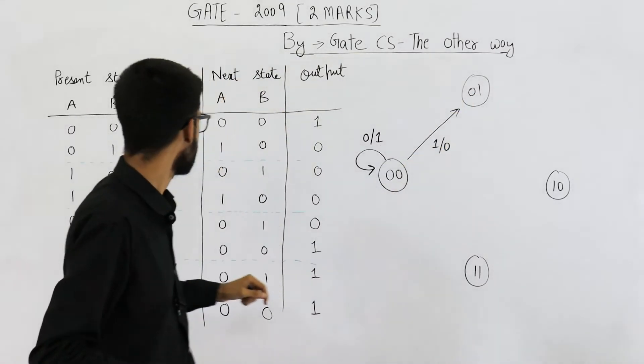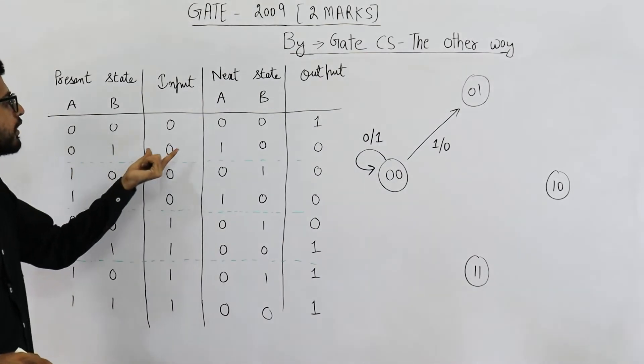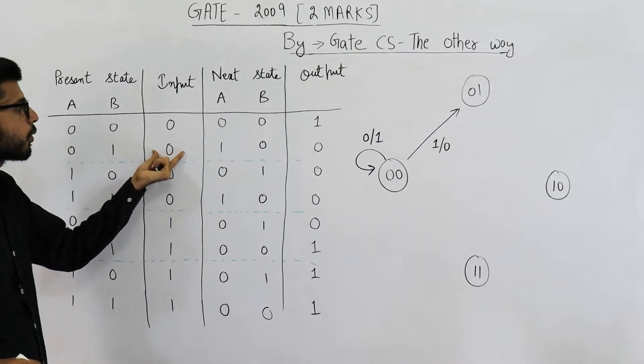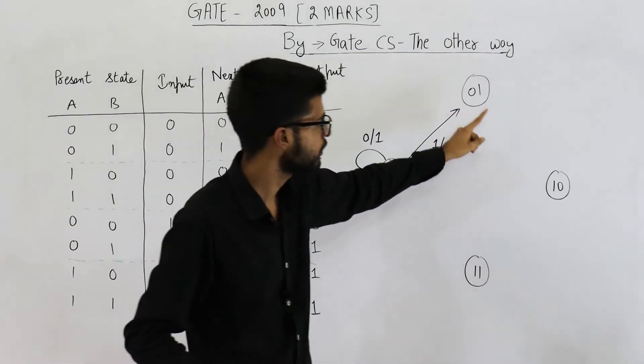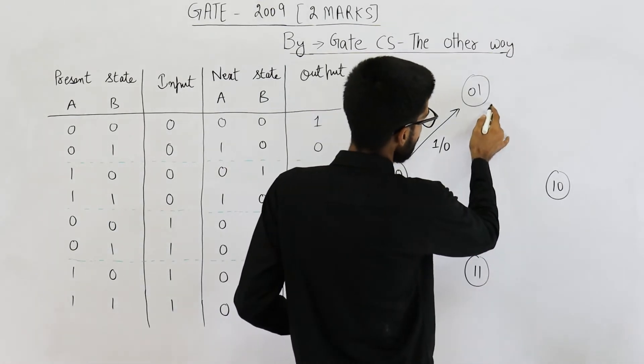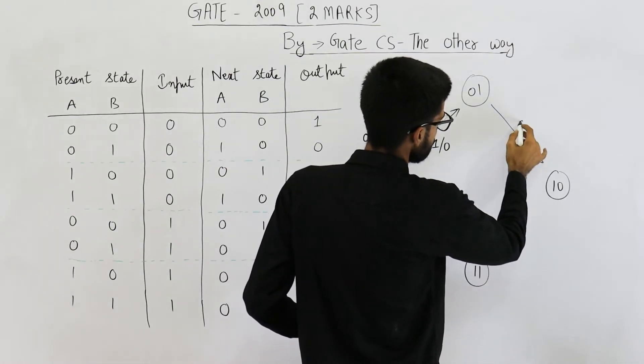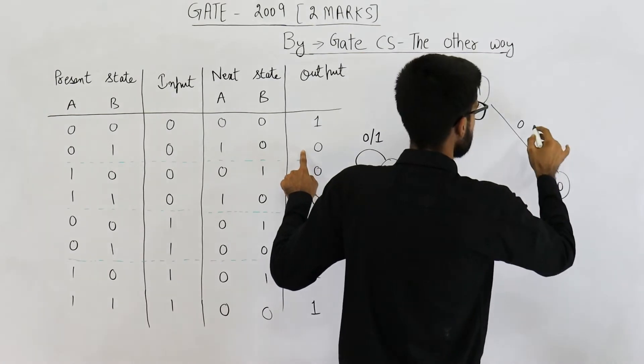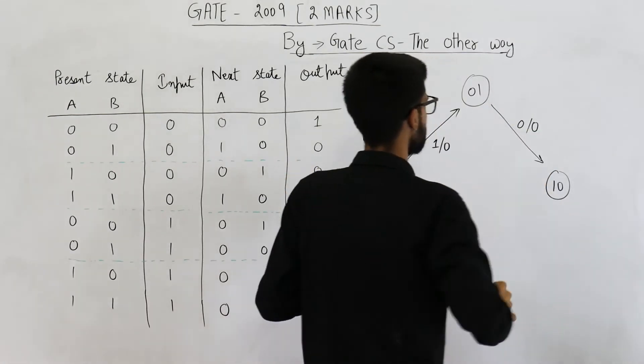Let's move on to 0,1. 0,1 if input=0 will go to 1,0. 0,1 goes to 1,0 on input=0. And it will output 0 only.